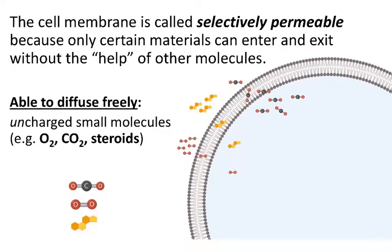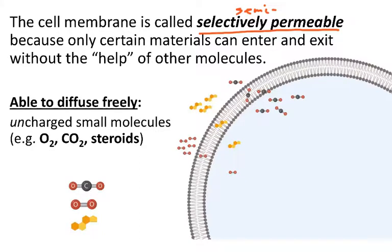The cell membrane is described as selectively permeable. To permeate means to pass through, and selective implies that there's a selection happening. Sometimes this is also described as semi-permeable. So only some molecules can move across the cell membrane based on differences in concentration without the help of other molecules. That's a fairly limited group — it includes carbon dioxide (CO2), oxygen gas, and steroids.